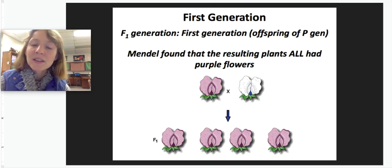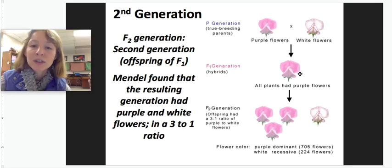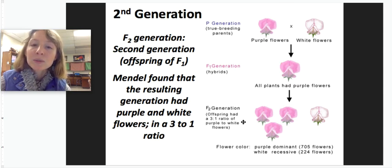He then thought: what if I take those offspring and breed them with each other — self-pollinate those F1 plants? When he bred the F1 generation purple hybrids with each other, the F2 generation had offspring in a 3 to 1 ratio — some were purple and some were white.